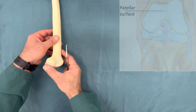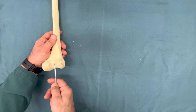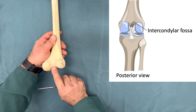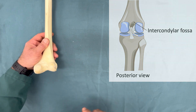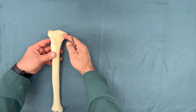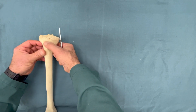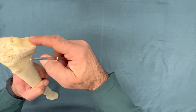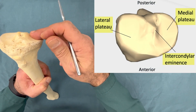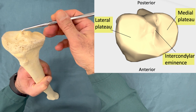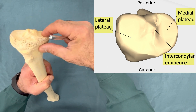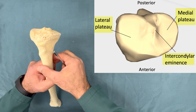On the posterior side we have a notch, and at the bottom part is the intercondylar fossa, which holds the cruciate ligaments of the knee joint located inside the joint. On the tibial side we have the medial and lateral condyles. The superior surface of the condyles is relatively flat, known as the plateau. Between these two we have the intercondylar eminence, and the femoral condyles articulate with these plateaus.